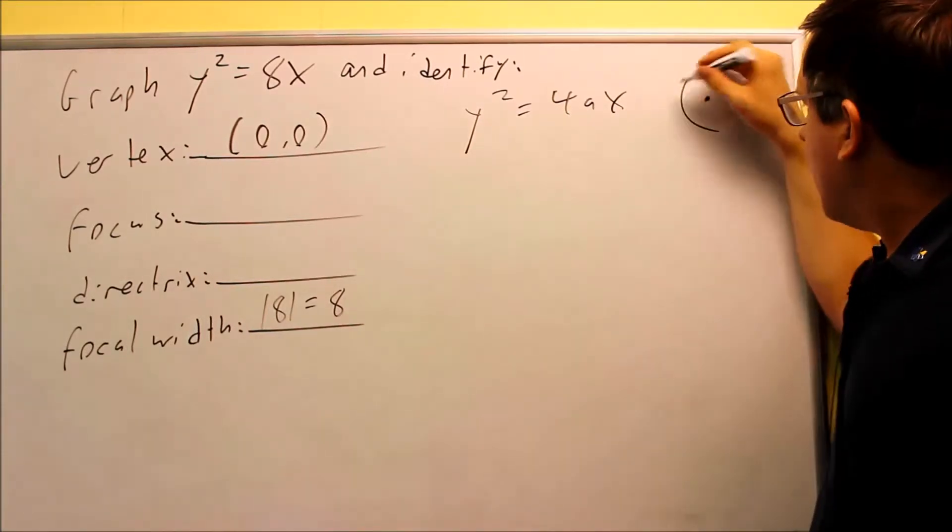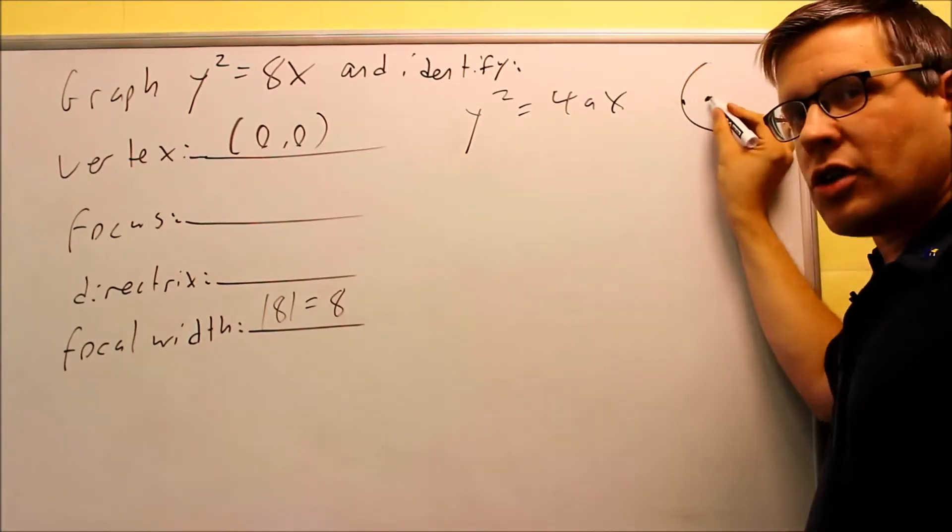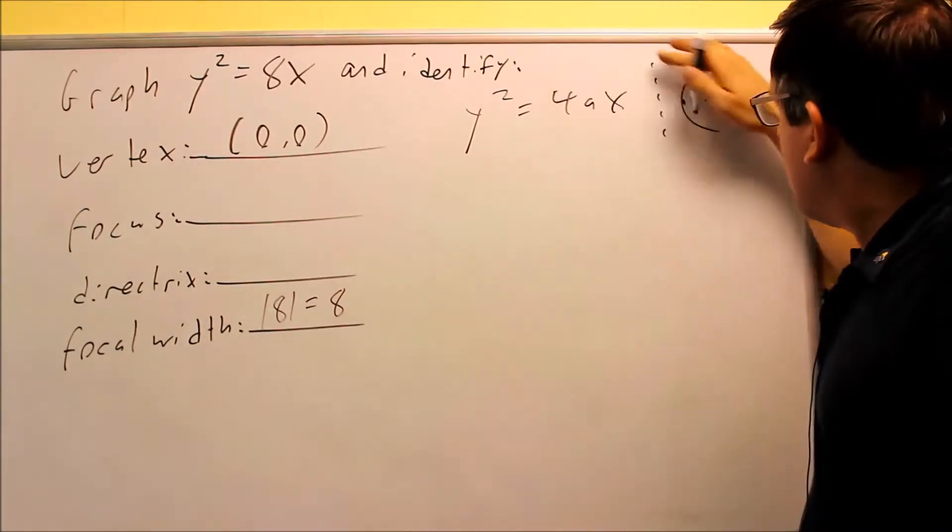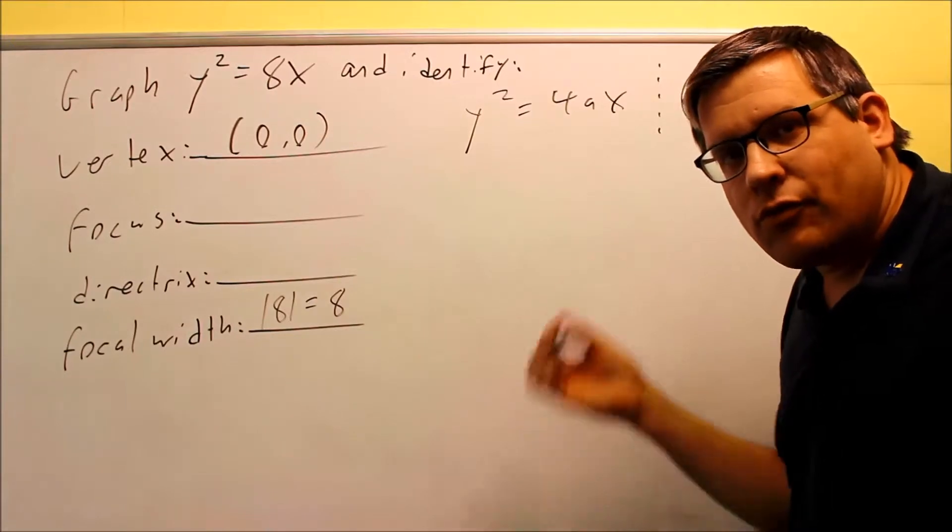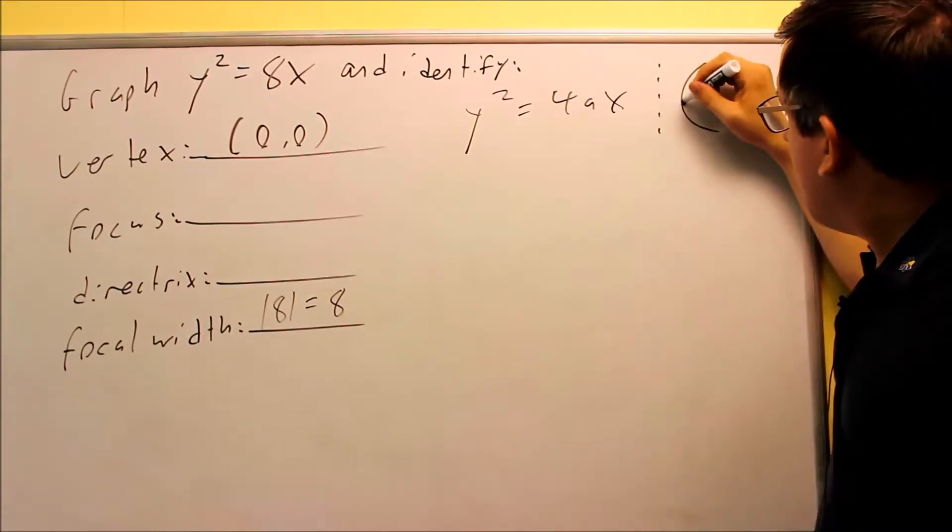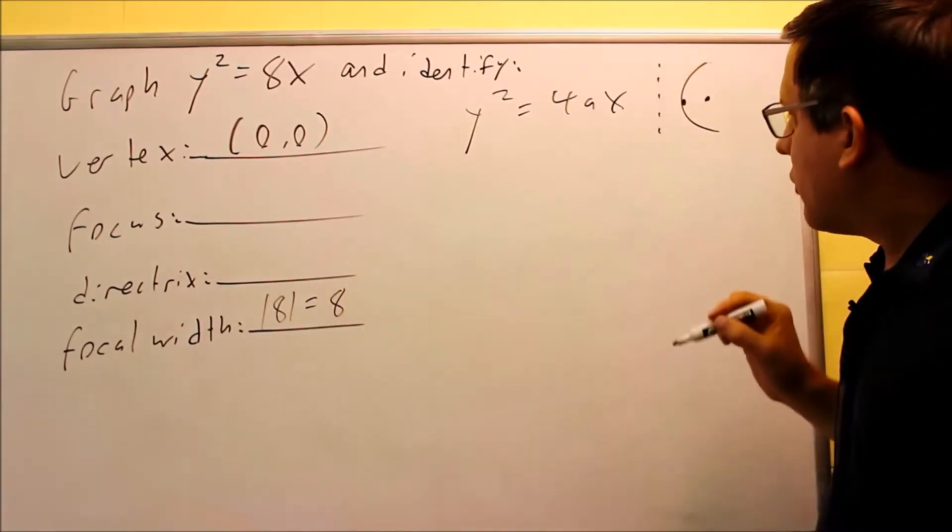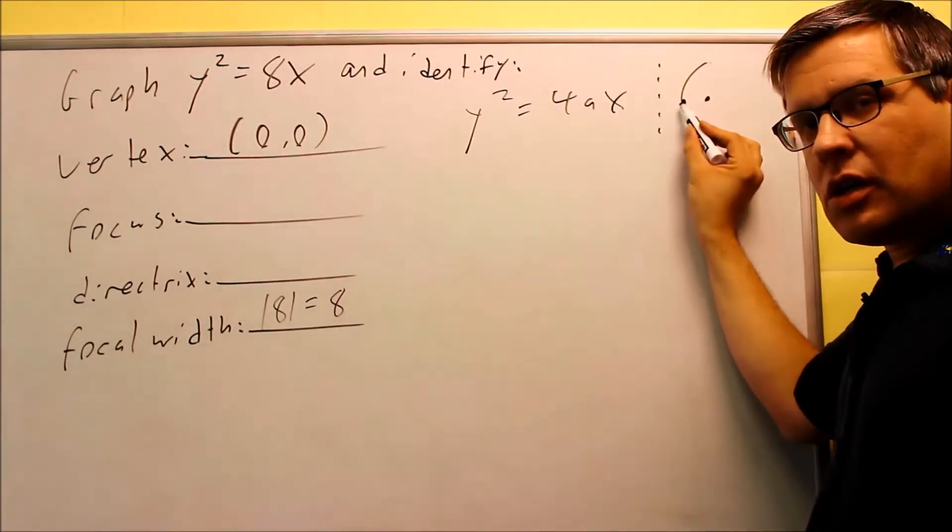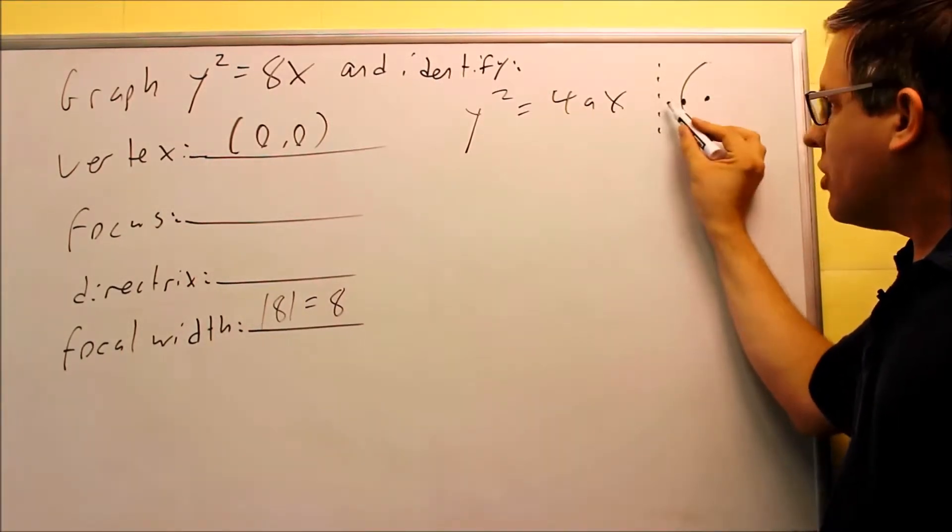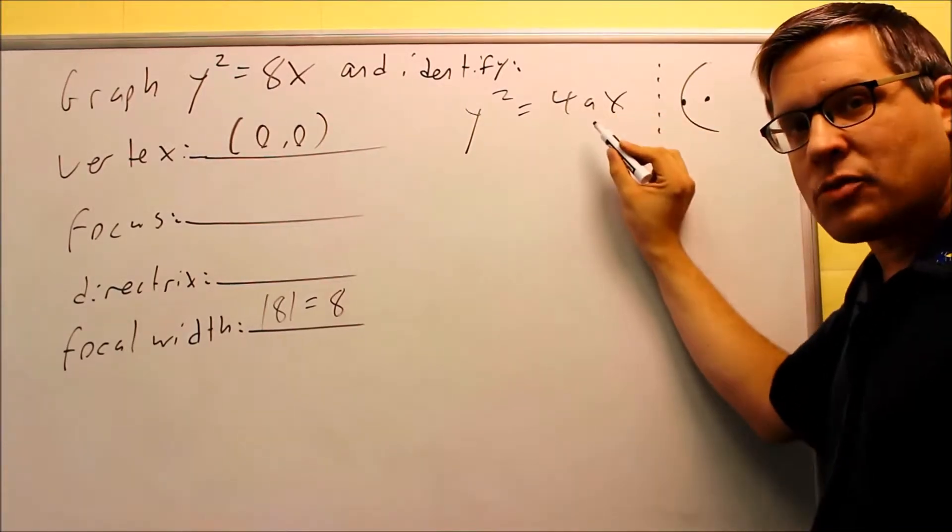So my focus is going to be to the right of the vertex, and my directrix, which is also part of your definition for graphing parabolas, that's also going to run to the left. So the a value is going to be how you find out how far this is in each direction. So that's where the a comes from in the formula.